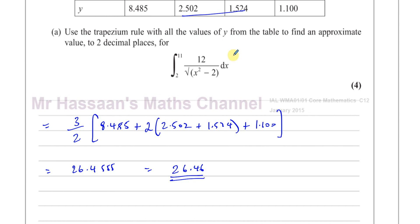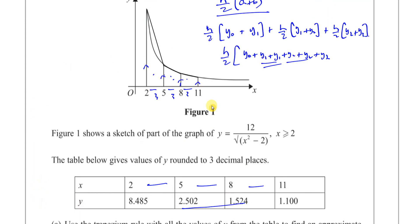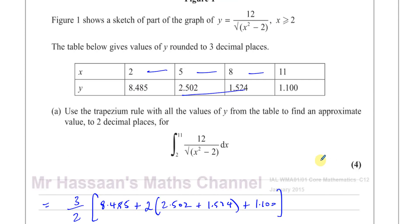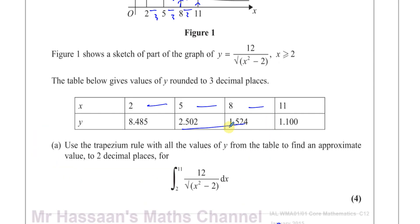This is an approximate value, not the exact value, because we used the trapezium rule rather than integrating directly. As you can see, the trapezium rule won't give the exact area — in this case there is some sort of overestimate; we're getting a value bigger than the actual area. That's part A done.